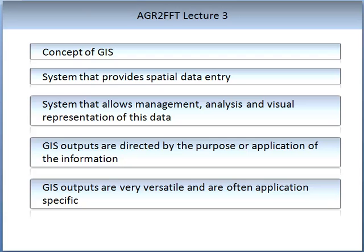GIS outputs are directed by the purpose or the application of the information. What this means is that GIS outputs can be very versatile and they are often application-specific in their nature.